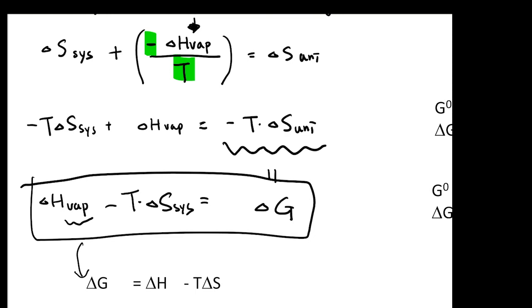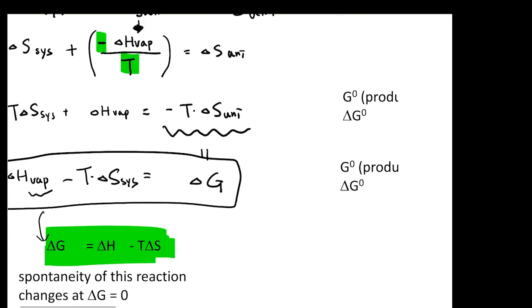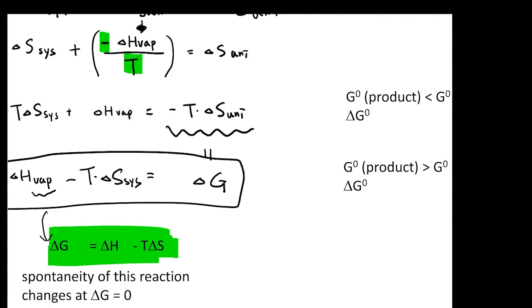So this is the most important equation of this chapter: delta G equals delta H minus T delta S. This is the equation you really need to memorize. The important thing is that previously we say if your delta S universe is positive, then you have a spontaneous reaction. Since your delta G equals negative T times your delta S universe, and temperature is always positive, your delta G for a spontaneous reaction will always be negative.